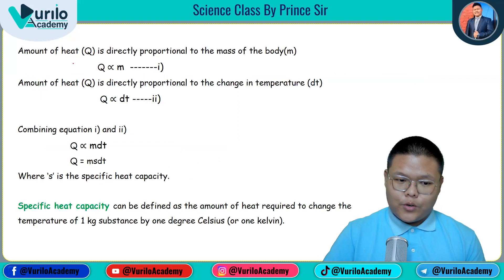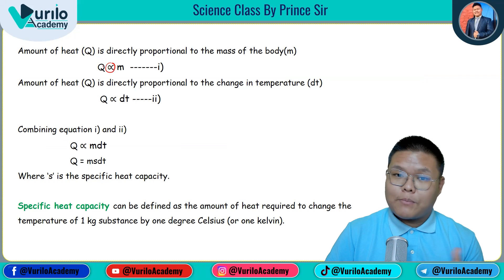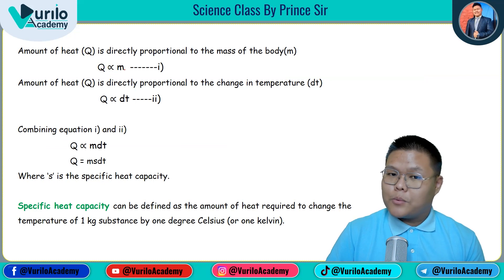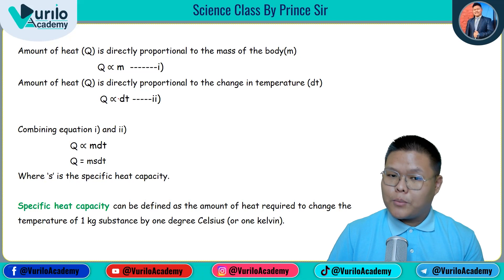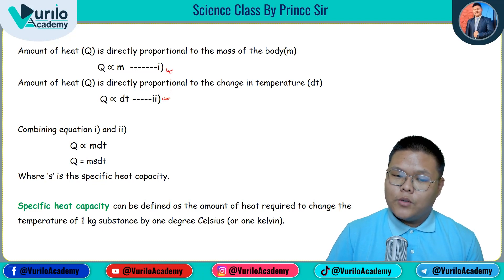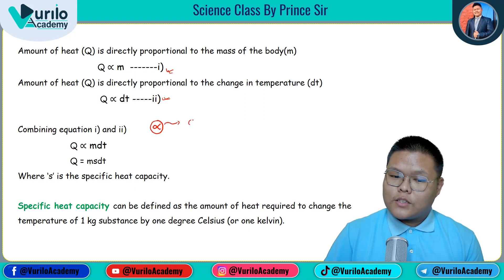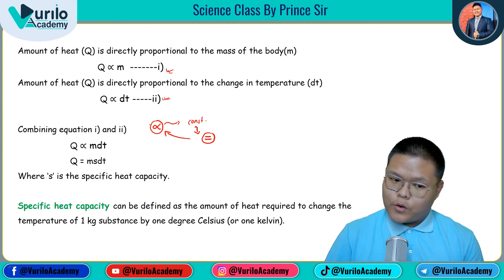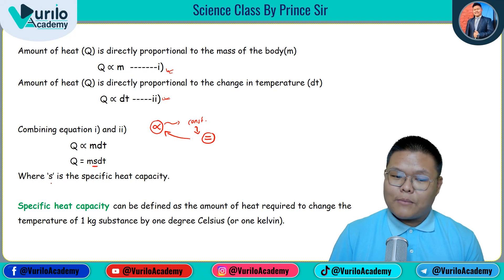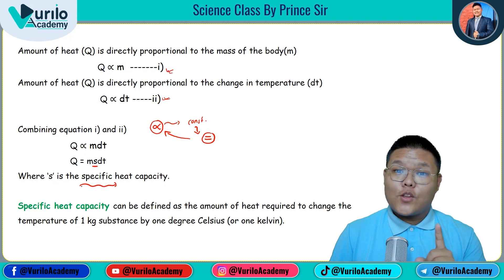Now we establish: the amount of heat Q is directly proportional to the mass of the body — Q ∝ m. In the same way, the amount of heat Q is directly proportional to the change in temperature — Q ∝ ΔT. Now we combine these two equations: Q is directly proportional to m × ΔT. In physics, to remove the proportionality sign, we must place a constant.